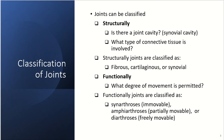We like to classify joints. We can classify them based on their structure or their functionality. Structurally, what we look for when classifying joints is their joint cavity, also called a synovial cavity, and what kind of connective tissue is involved. Structurally, joints are classified as either fibrous, cartilaginous, or synovial.